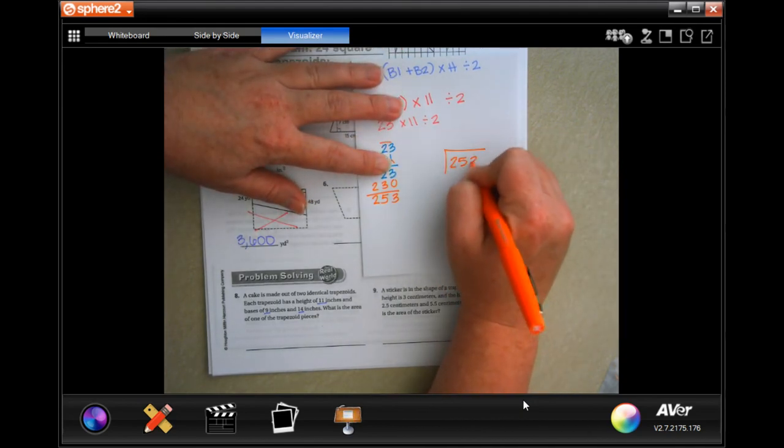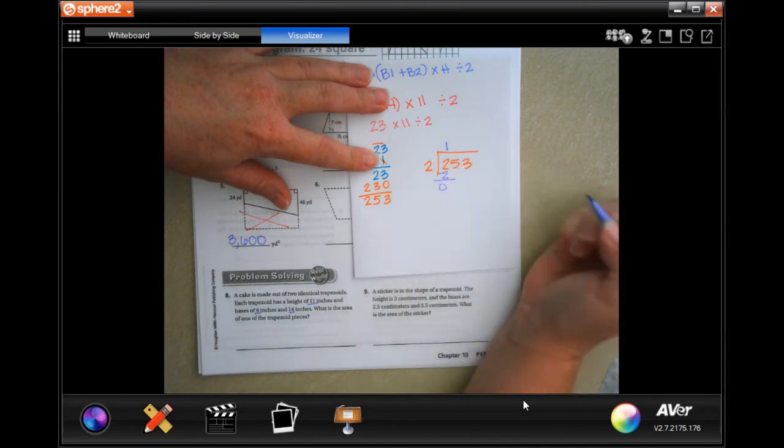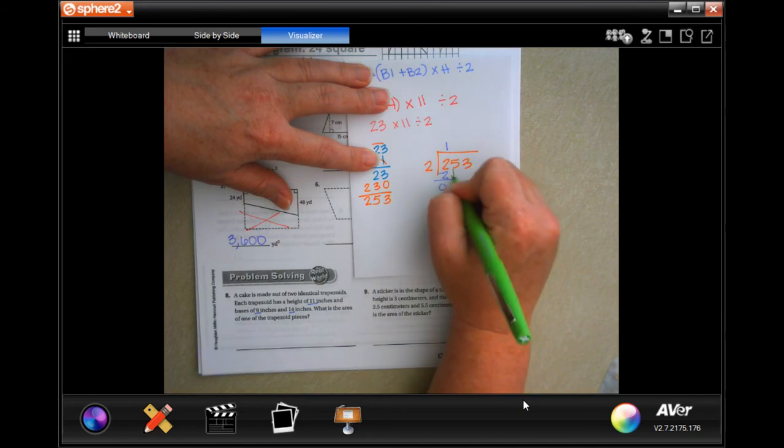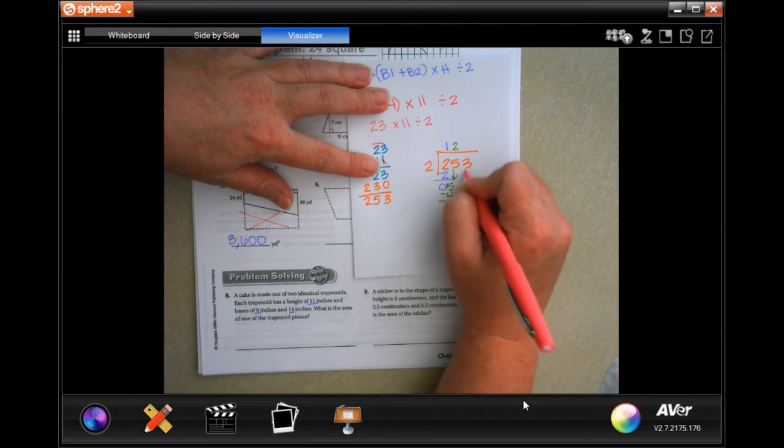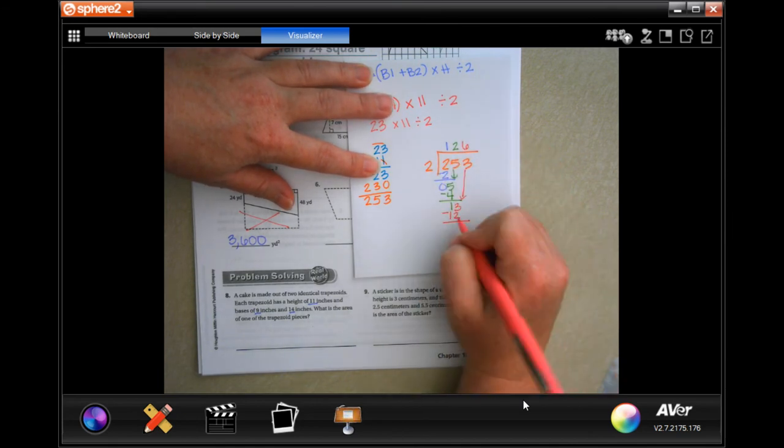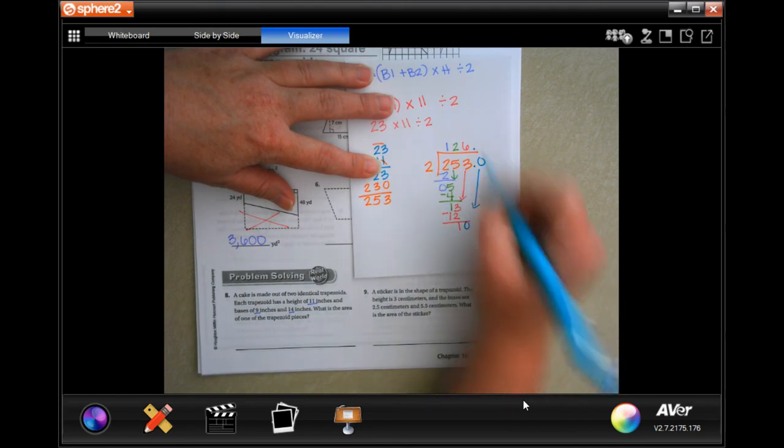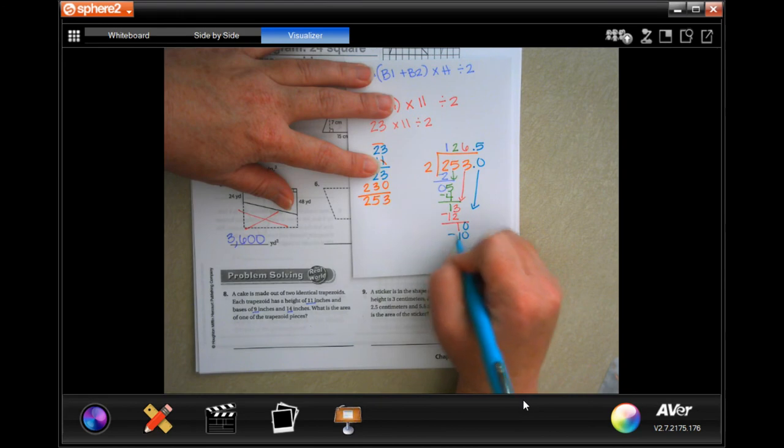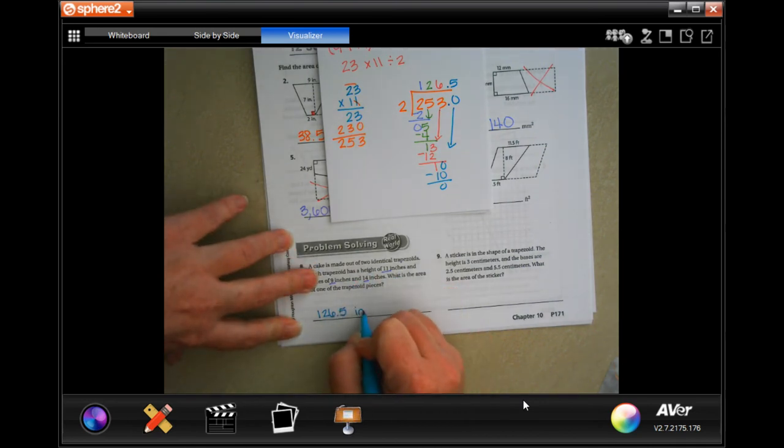So let's do it. 2 goes into 2 one time. 1 times 2 is 2, subtract, 0. 0 is definitely smaller than 2, so I'm going to bring down my 5. 2 goes into 5, 2 times, because 2 times 2 is 4, we get 1 left over. So 1 is smaller than 2, I'm going to bring down my 3. 2 is going to go into 13, 6 times, because 6 times 2 is 12, I get 1 left over. So now I'm going to have to put a decimal and a 0, bring that decimal up and the 0 down. 2 goes into 10, 5 times. 5 times 2 is 10, subtract, get 0. So 126.5, we're dealing with inches, and we multiplied inches by inches, so it's inches squared.